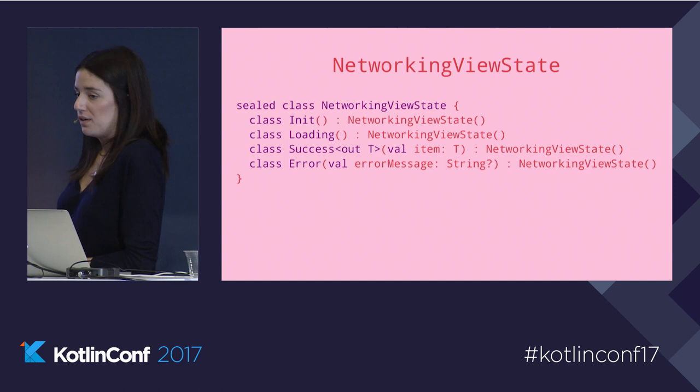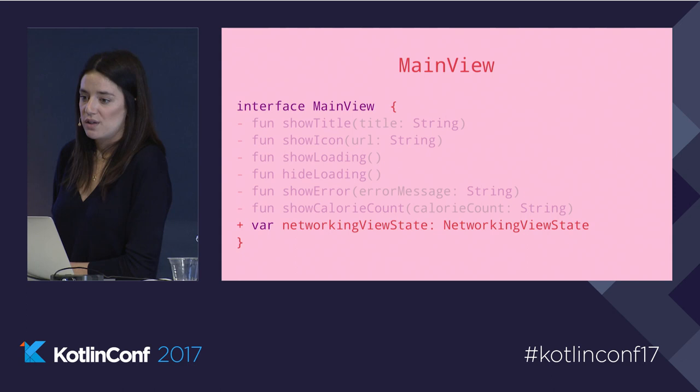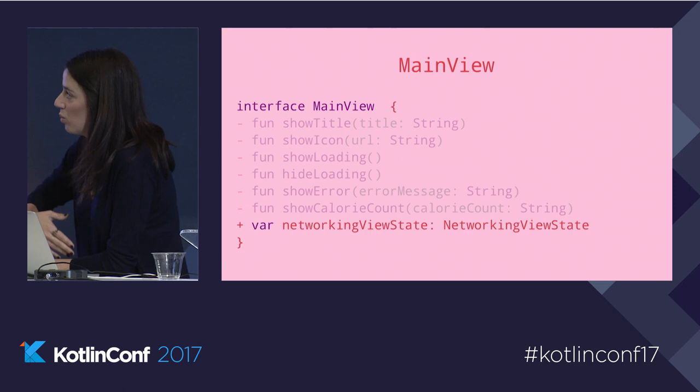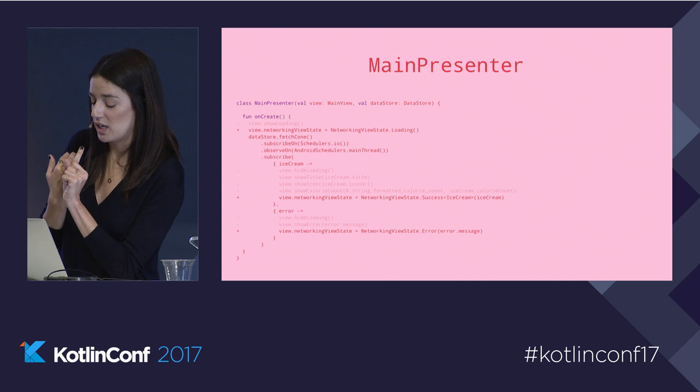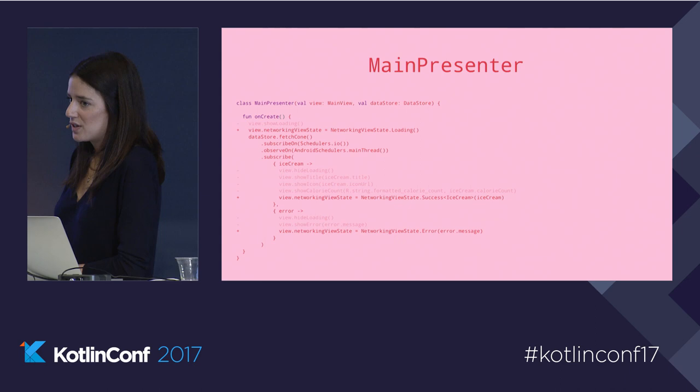So now if we go back to our main view, we're going to update it with our newly created NetworkingViewState. This is my favorite kind of diff — we're deleting everything and just replacing it with a networking view state property. It's a var because we want it to be mutable as the state changes. Now in our main presenter, we're removing all the code related to showing the success case, and simply replacing it with: loading, then on success we pass the ice cream object, and on error we just pass the error message.